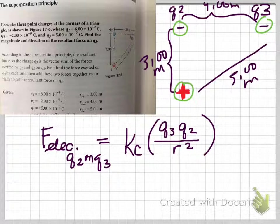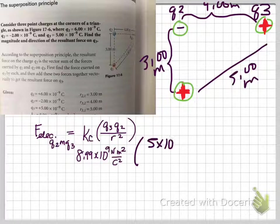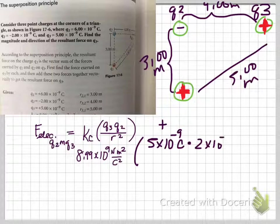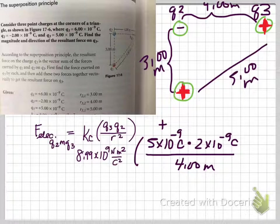It's going to equal Coulomb's constant times the charge of 3 times the charge of 2 divided by the distance between them squared. Coulomb's constant is 8.99 times 10 to the 9th. We're told that the charge of Q3 is positive. The charge is 5 times 10 to the negative 9th Coulombs, that's positive, times 2 times 10 to the negative 9th Coulombs. And the distance between them is 4 whole meters, which is astounding. I mean, that's a pretty significant distance.